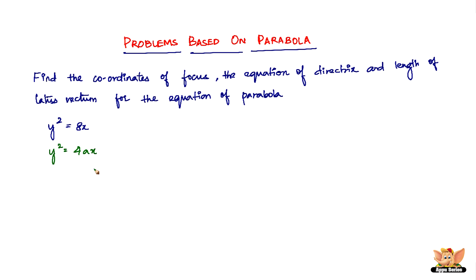This is one of the many standard equations of parabola. Now, equating, you can see that 8 = 4a, so 4a = 8, which gives us a = 2. This is the first and most basic value you need to extract as soon as you have the equation of the parabola.